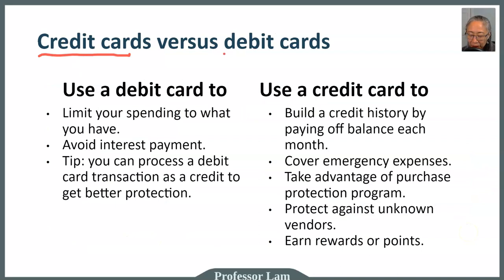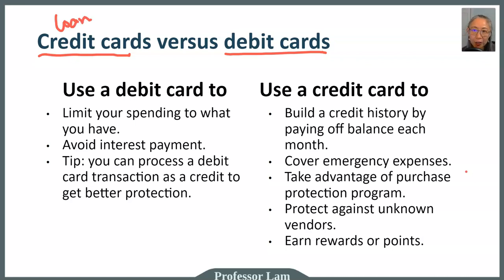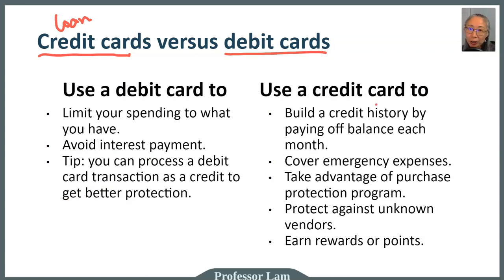Next, let's talk about the difference between a credit card and a debit card. They both have their uses and advantages and disadvantages. With a debit card, the money comes directly from your checking account. A credit card is technically a loan — you can spend money you don't have. With a debit card you can't; you are spending your own money from your checking account. The advantage of using a debit card is that you can limit your spending to what you have and there's no interest payment because you are using your own money. But there are a lot of advantages to using a credit card as well.